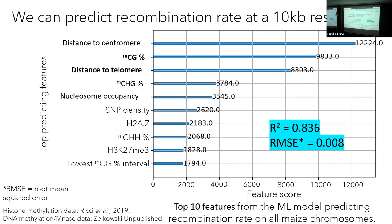Looking at the feature ranking plot showing the most predictive features, the top feature is distance to centromere. This is really interesting because when chromosomes first pair, we think they pair by the telomeres — so recombination starts going from telomeres into the centromere. With crossover interference, if you have crossovers forming near chromosome ends, you cannot get them formed closer to the centromere. This signals to us that chromosome dynamics might be at play. Similarly, distance to nearest telomere ranks highly, along with CG methylation, CHG methylation, and nucleosome occupancy — all signaling that features about open chromatin influence recombination.